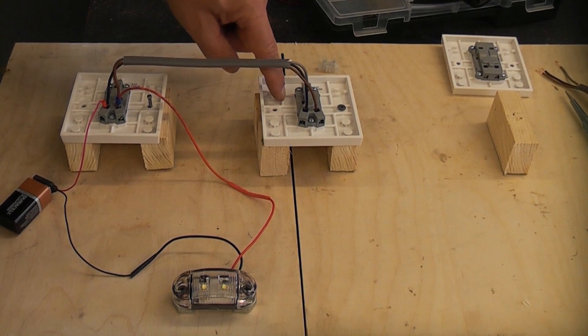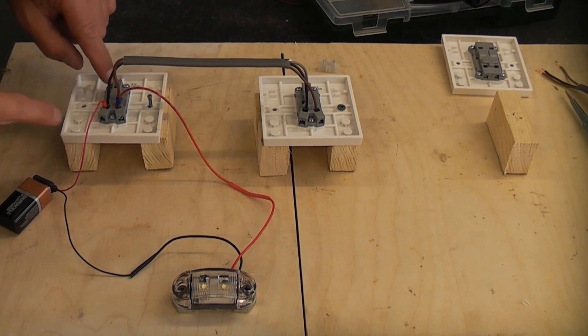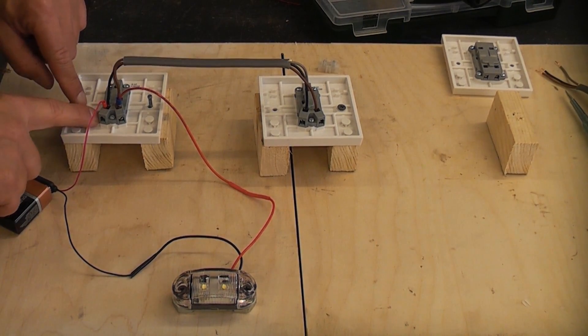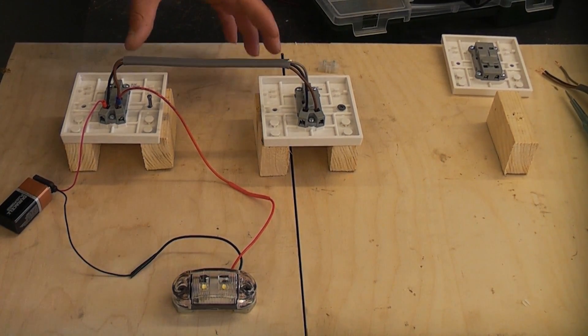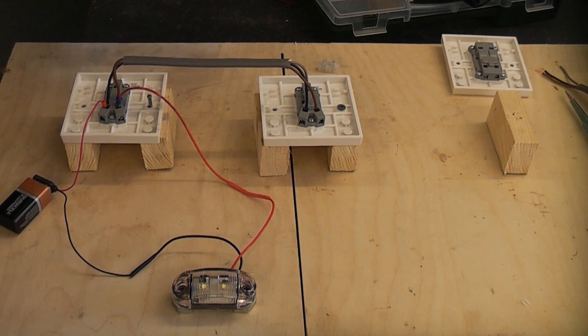These two switches are both two-way switches so they both have a common, an L2 terminal, and an L1 terminal. If you wanted to add another switch to this to make it three-way or even more than three-way, you can put as many intermediate switches as you want in a circuit like this.